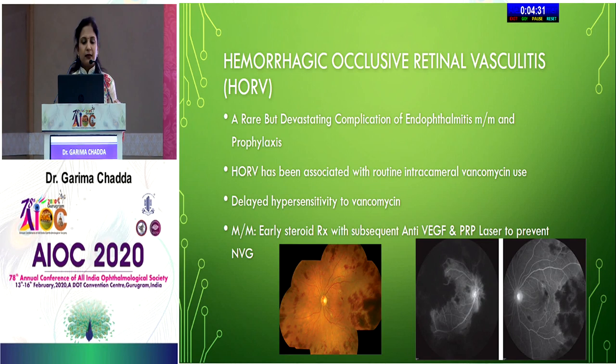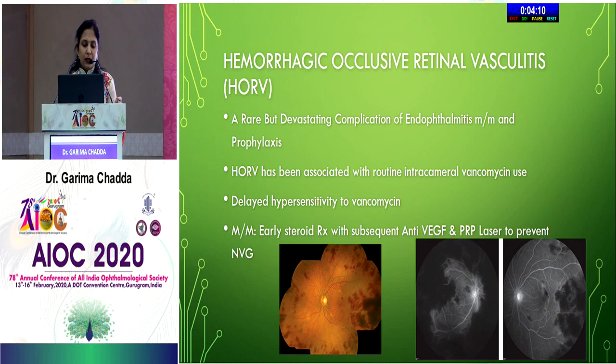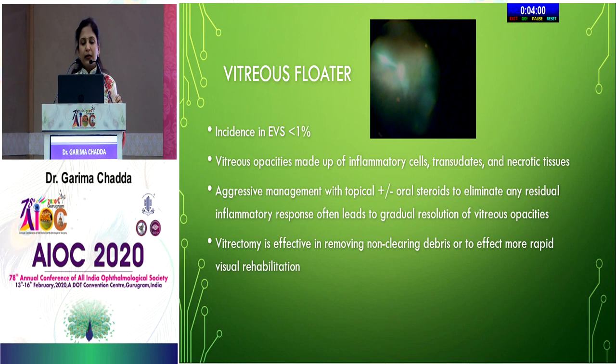Hemorrhagic occlusive retinal vasculitis (HORV) is a rare but devastating complication of endophthalmitis management and prophylaxis — it is a delayed hypersensitivity reaction to vancomycin, also seen when vancomycin was used intracamerally as prophylaxis during cataract surgery. Management includes early steroid treatment, subsequent anti-VEGF, and PRP laser to prevent neovascular glaucoma. Vitreous floaters incidence is less than 1%; aggressive steroid management aids gradual resolution, and vitrectomy effectively removes non-clearing debris for more rapid visual rehabilitation.